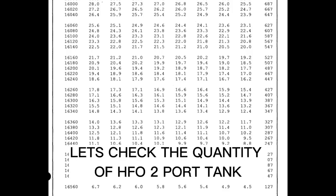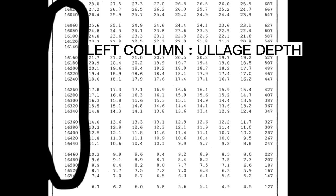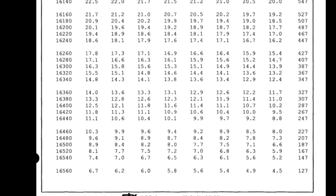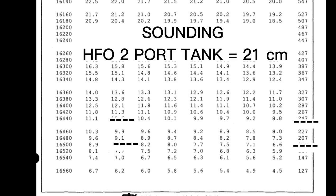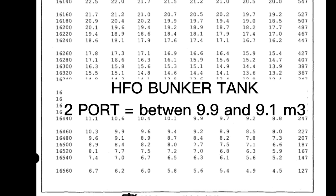Let's check the quantity of HFO to port tank. Left column: ullage depth. Right column: sounding depth. Sounding HFO to port tank equals 21 cm. Sound is 210 mm, and it is between 207 mm and 227 mm. By that, we conclude that the value of 21 cm is between 9.9 and 9.1 cubic meters. HFO Bunker Tank to port equals between 9.9 and 9.1 cubic meters.